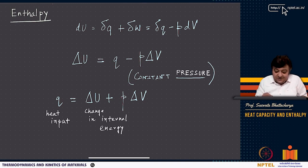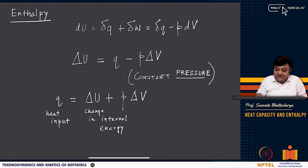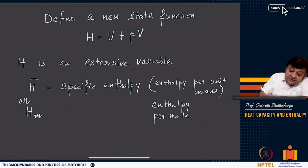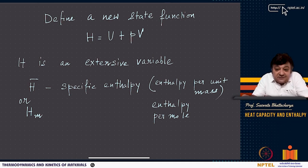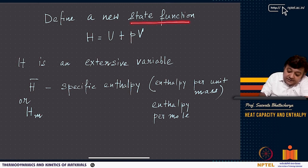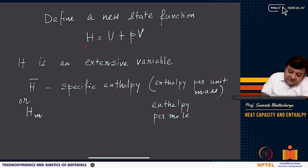At constant pressure, q is delta u plus p * delta v — not just delta u. To simplify, we define the new state function called enthalpy h = u + pv, where pv is related to mechanical work and u is the internal energy. Since u and v are extensive, h is also an extensive variable and a state function — it depends only on the states, not the path.